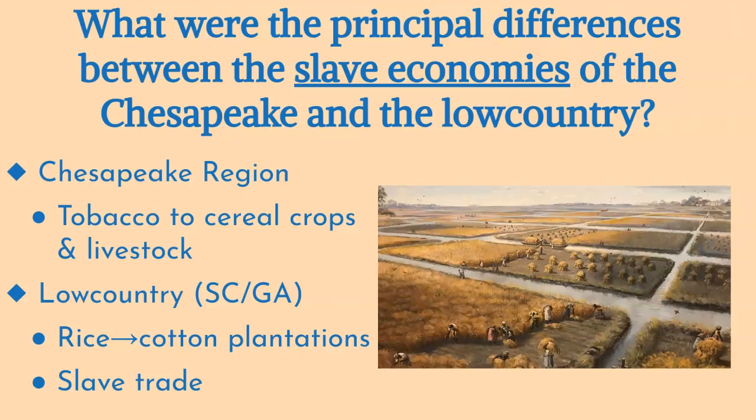In contrast, the Lowcountry of South Carolina and Georgia was heavily focused on rice cultivation, a crop that enjoyed strong international demand. Rice farming was labor-intensive, requiring a large number of enslaved workers to manage the irrigation systems and work in the fields. However, after 1815, the region began to experience increased competition, particularly from textile manufacturing in the north. This economic shift, combined with the introduction of the cotton gin, spurred a transition from rice to cotton cultivation in much of the region.